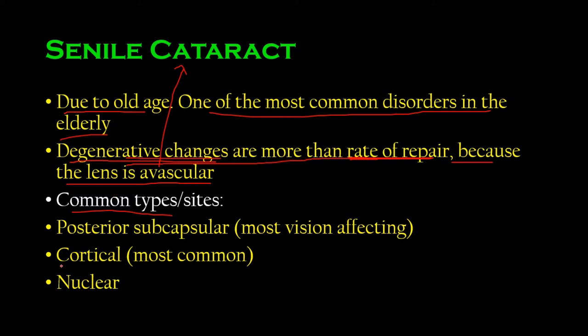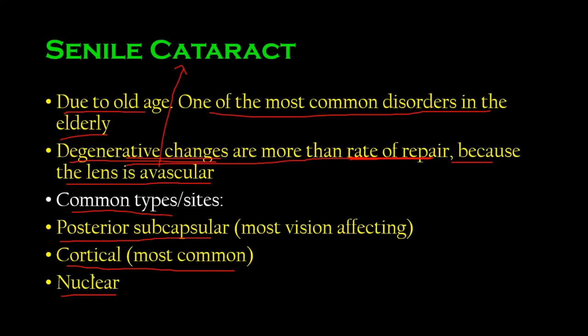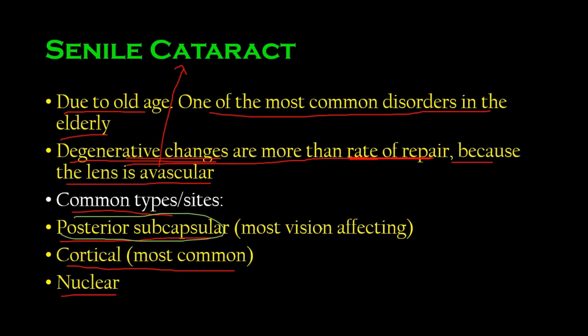The common types of cataracts in older people: most have cortical cataracts, which occur in the cortex. There are also posterior subcapsular and nuclear types. To recap: the nucleus is the central area — degenerative changes there cause nuclear cataracts. The outer area is the cortex — the most common site in old people — causing cortical cataracts. Degenerative change immediately below the capsule causes posterior subcapsular cataracts.